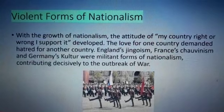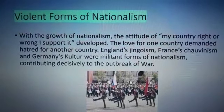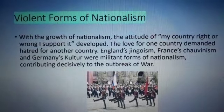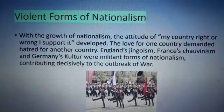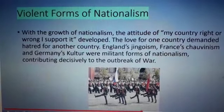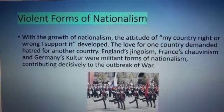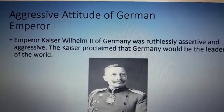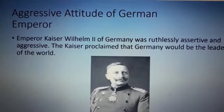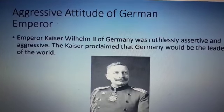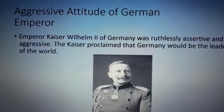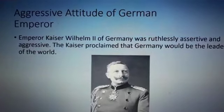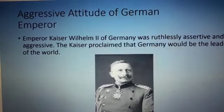Violent form of nationalism: the love for one's own country demanded hatred for another. England's Jingoism, French Chauvinism, and Germany's Kultur were militant forms of nationalism contributing decisively to the outbreak of war. The German Emperor Kaiser Wilhelm II was ruthlessly assertive and aggressive. Germany started strengthening their navy, and Britain feared that the German navy could be directed against them, creating tension between the two powers.